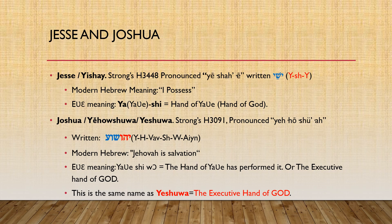The Ain could also be an O sound — it really can represent any vowel at this point. It is transliterated to mean 'Jehovah is salvation.' In Ebe, we read Yahweh-She-Wa, and that means 'the hand of Yahweh has performed it,' all to signify the executive hand of God. This is the same name as Yeshua, which is the executive hand of God that performs his bidding.